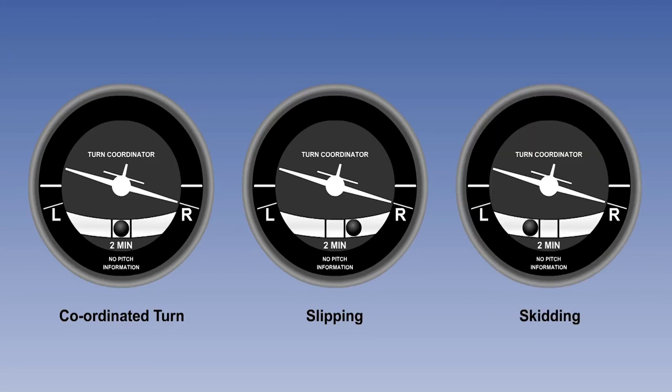The third instrument also shows an uncoordinated turn to the right, with the aircraft sideslipping towards the outside of the turn, a skidding turn. Left rudder, or more bank, would balance the turn.